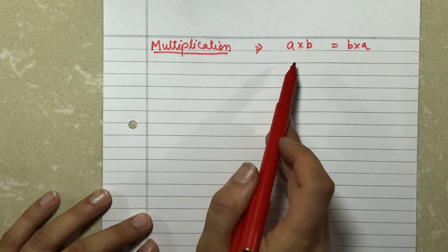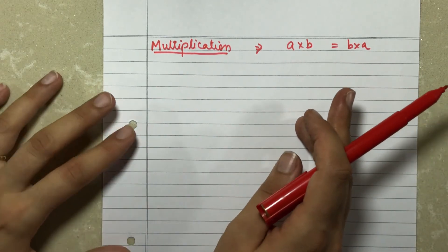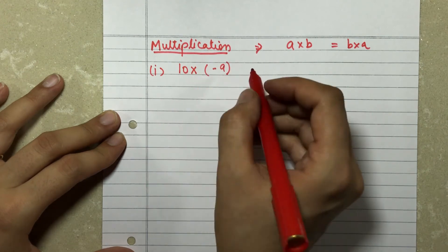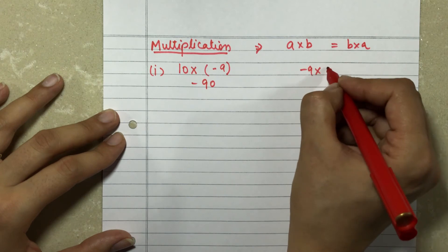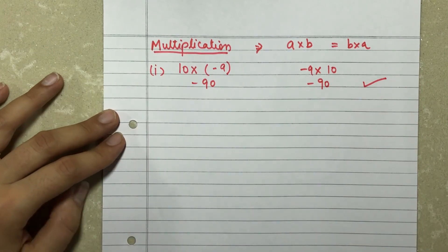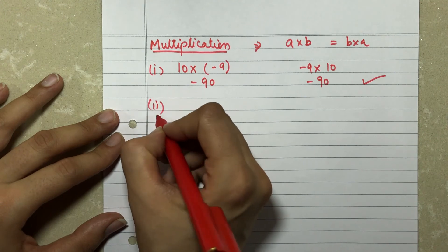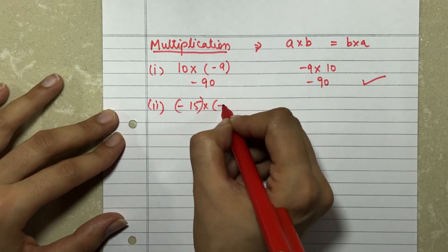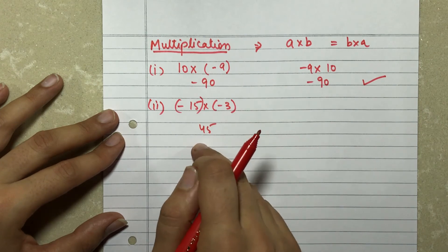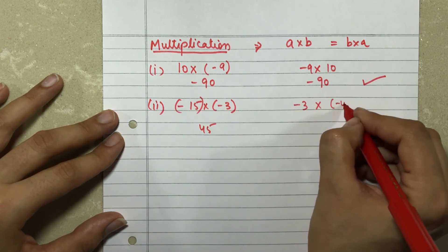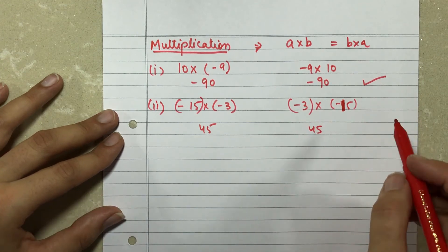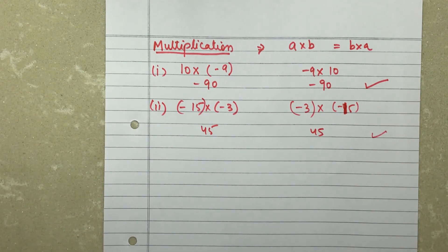For multiplication, whenever we multiply two numbers and switch their position, the answer should be the same. Let's check: 10 into minus 9 gives minus 90, and minus 9 into 10 also gives minus 90. Another example: minus 15 into minus 3 — since both signs are like, the answer is positive 45. Switching positions, minus 3 into minus 15 also gives positive 45. So commutative property stands true for multiplication: a into b equals b into a.